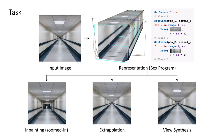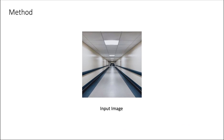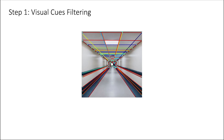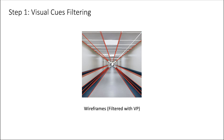We propose a search-based algorithm guided by neural network detected visual cues to find the program that best explains the image. Taking an image as input, we first apply neural VPS to detect the vanishing point, and LCNN to extract wireframe segments in the image. Next, we filter out wireframe segments that are too short in length or do not point to the vanishing point. We call the remaining wireframe segments the valid wireframes, and use them to guide our search.